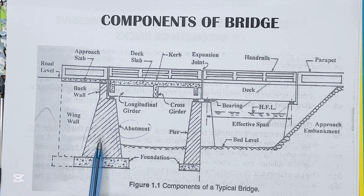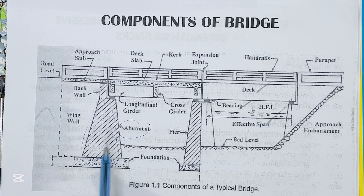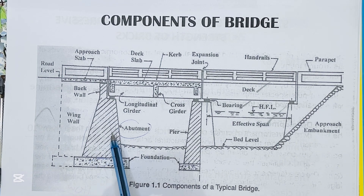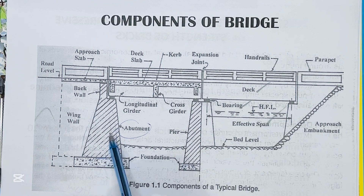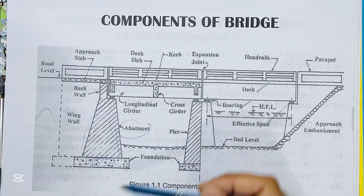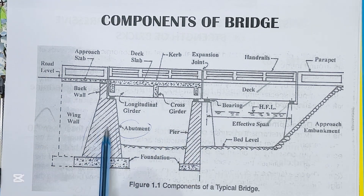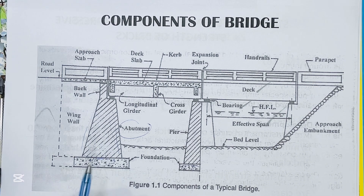Abutment is a substructure at the ends of a bridge span or dam, supporting superstructures. An abutment in a bridge is a structure that supports the bridge in both directions — horizontally as well as vertically. The bridge abutment connects and transfers the bridge load to the ground.